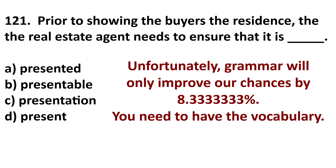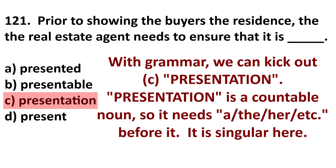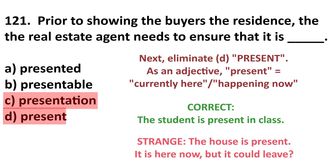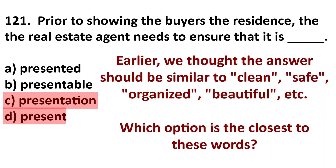Let's eliminate C — 'presentation' is a countable noun, so you need 'a' or 'the' before it. We don't have that, so C is out. Next, eliminate D — 'present' can be an adjective, verb, or noun, but as an adjective it means happening or existing now. It would be strange to say 'the house is present,' as if it might not be here tomorrow. So now we're down to A and B.